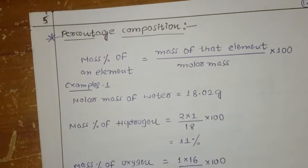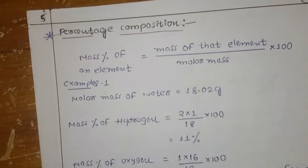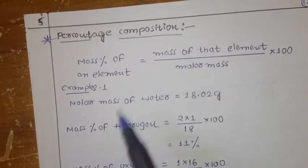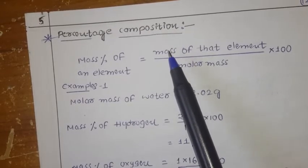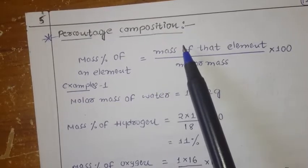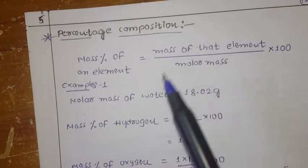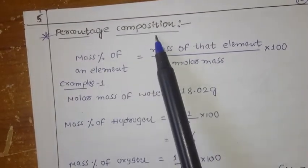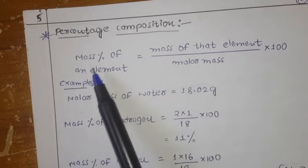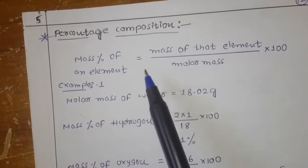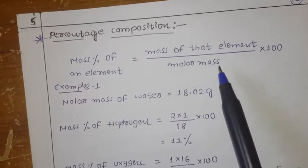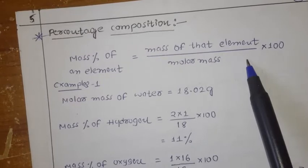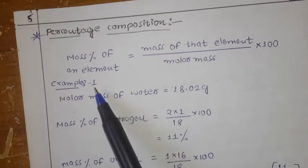Hello students. In the last video we saw how to calculate the equivalent weight of acids, bases, elements, and salts. Now we come to percentage composition. The formula for mass percentage of any element is: mass of that element divided by the molar mass, multiplied by 100. Let us go through an example.